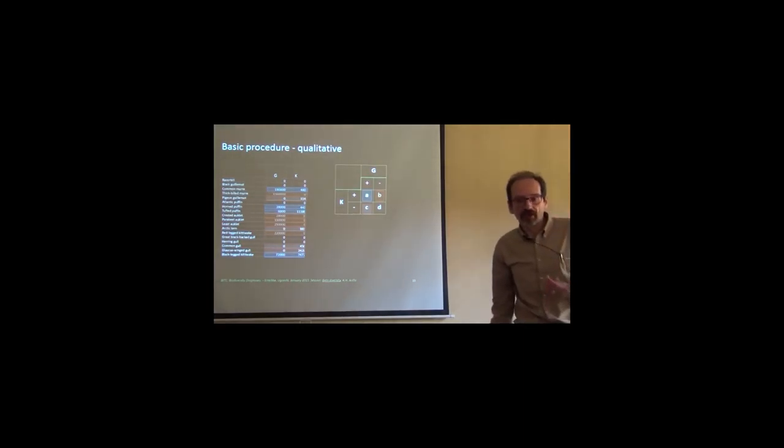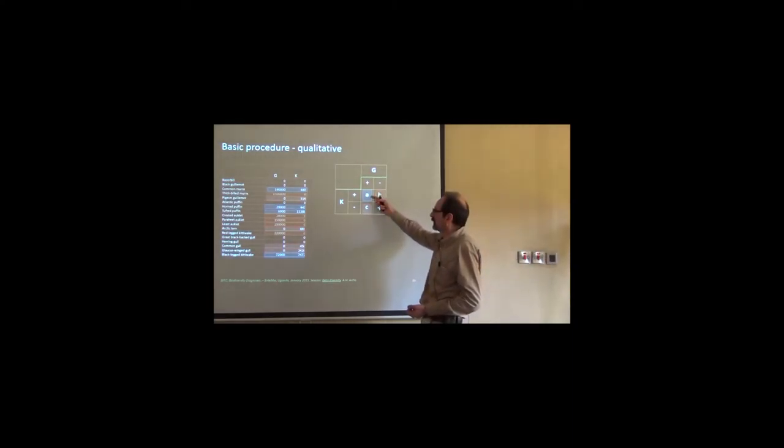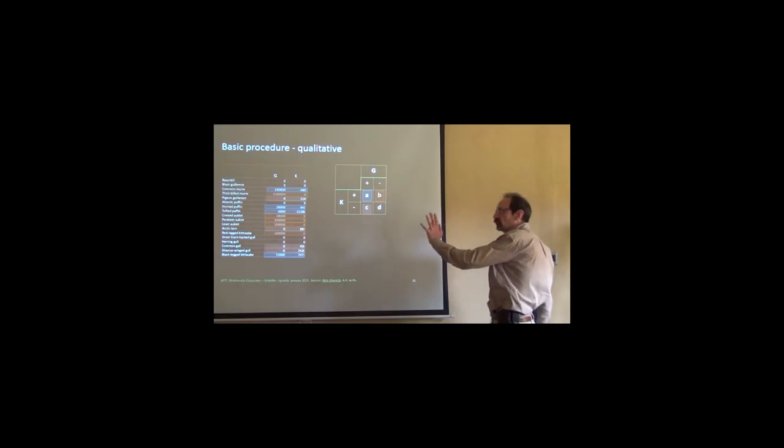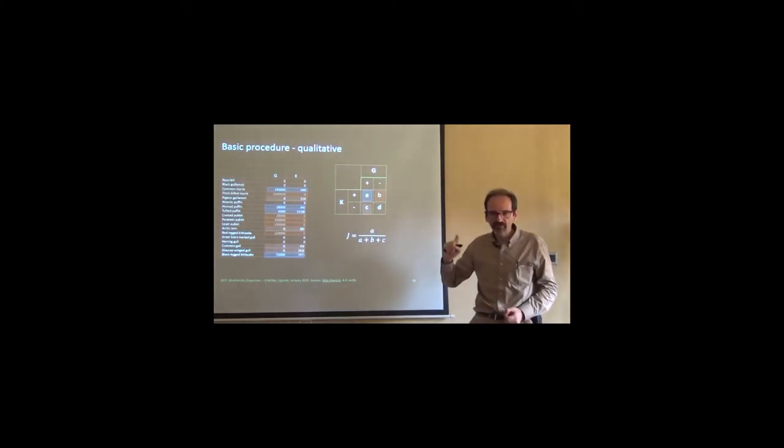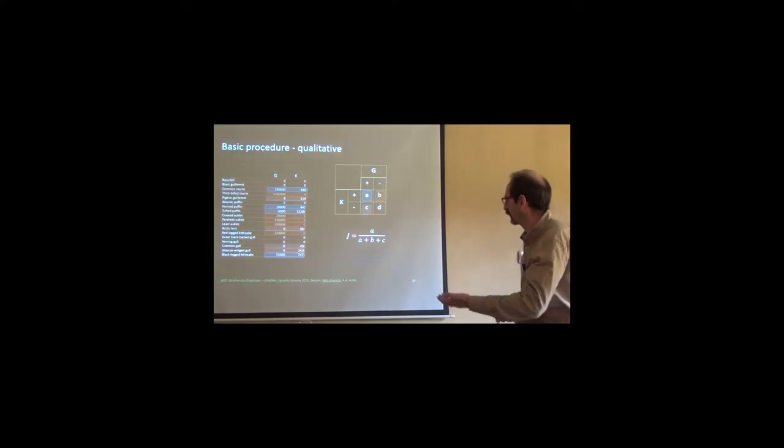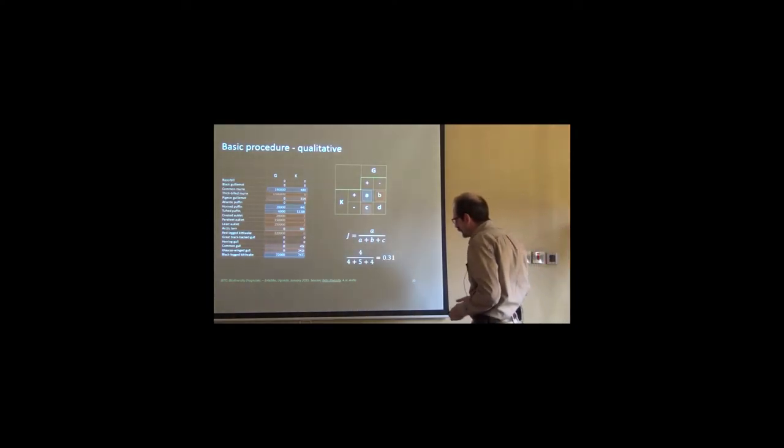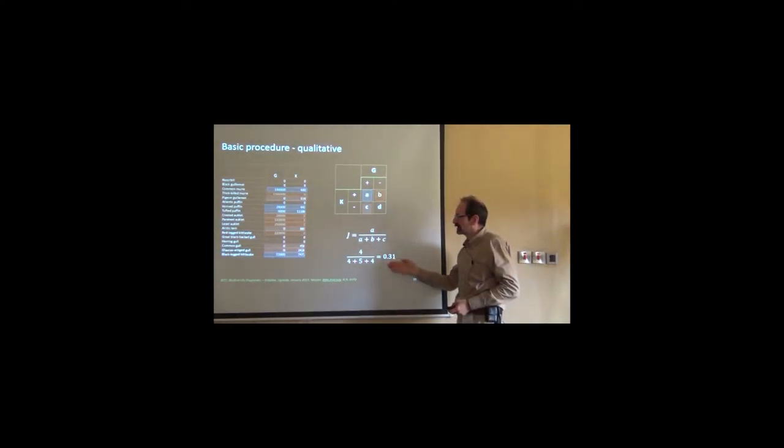With this, we can calculate a very simple index which looks at how many species are shared as respect to the total number of species in these two samples. And this is called the Jakar index that you know perfectly well. Commonalities, or shared species, divided by total number of species. Well, this total number of species, in this case, would render 0.31 Jakar.